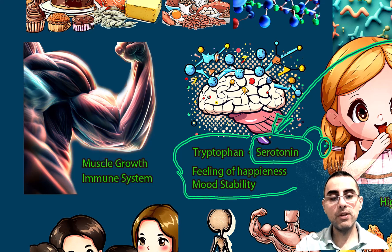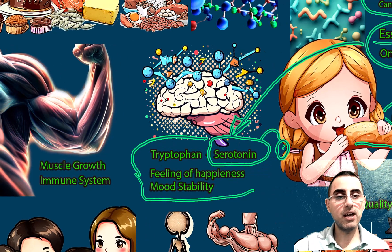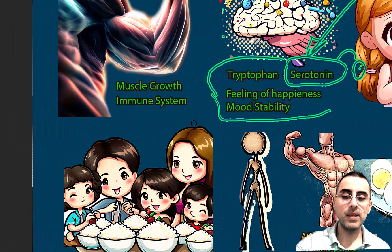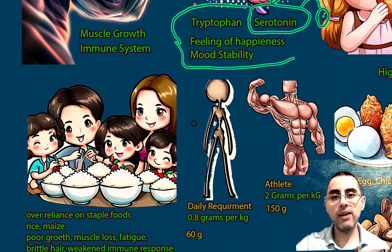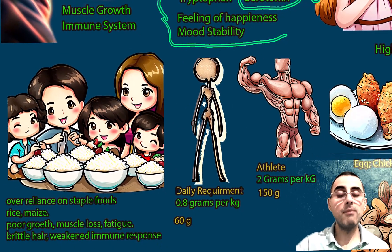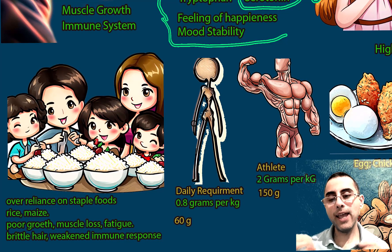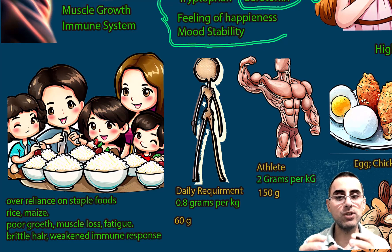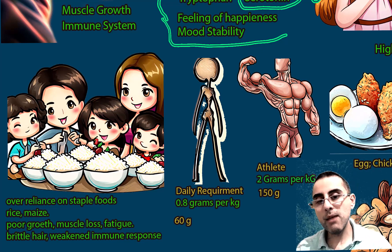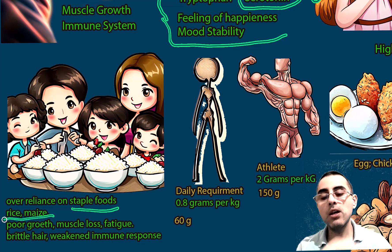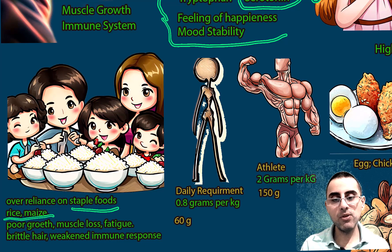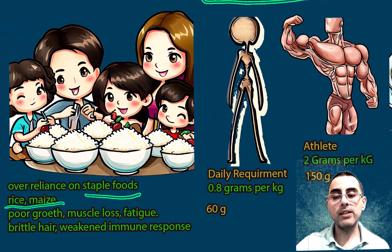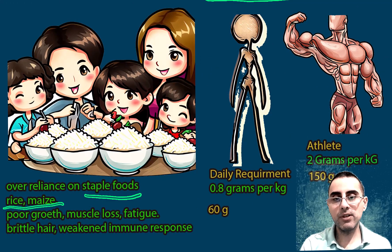Another important essential amino acid is lysine, which is important for protein synthesis and immune system function. People who are most at risk of essential amino acid deficiency are those highly dependent on one type of food — for example, in low socioeconomic populations whose staple foods are rice and maize. These foods contain amino acids but are not complete and lack certain essential amino acids.